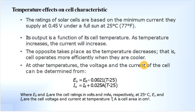We have already seen the different output characteristics of solar cells. We have even seen the series as well as parallel connection characteristics and how they vary with respect to current as well as voltage. Now, let us see the temperature and irradiance effects on cell characteristics.